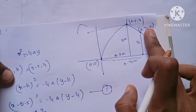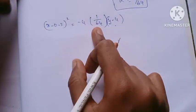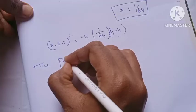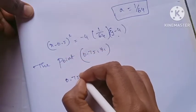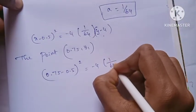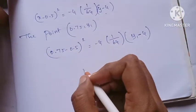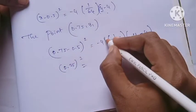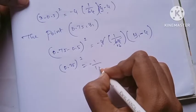Now we substitute the point (0.75, y1) into the equation. So: 0.75 minus 0.5 whole square equals minus 4 times 1/64 times y1 minus 4. That is 0.25 squared, which is 0.0625, equals minus 1/16 times y1 minus 4.